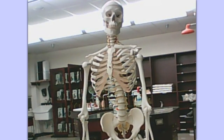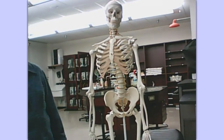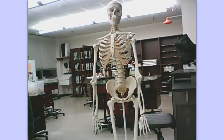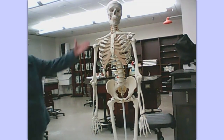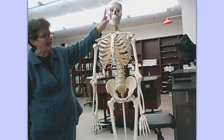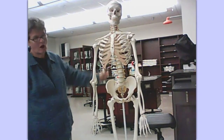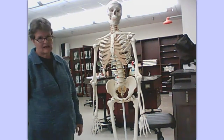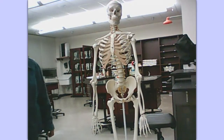We have one of our full skeletons standing in front of you tonight. He has basically two main parts: he's organized as an axial skeleton and appendicular skeleton. The axial skeleton consists of the head and the vertebral column, and everything else that hangs off of it is the appendicular skeleton.